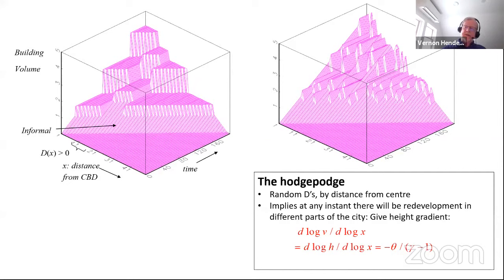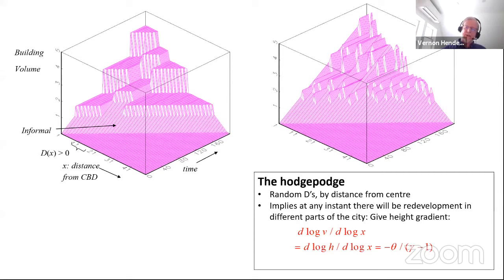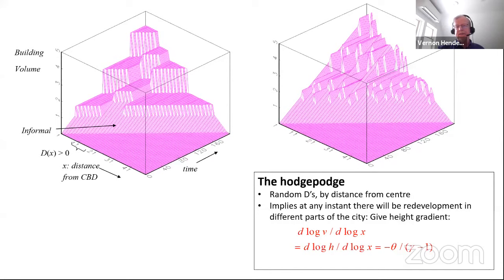You can use a simple, not elaborate model to think about the empirical stuff you want to test. It's using a model not to estimate it fully structurally, but to guide what kind of empirical work you want to do.